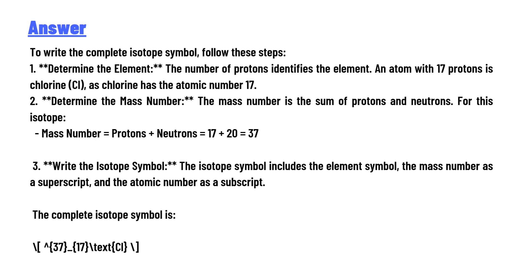Two, determine the mass number. The mass number is the sum of protons and neutrons. For this isotope, mass number equals protons plus neutrons equals 17 plus 20 equals 37.